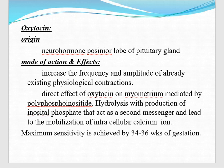Now the third method is oxytocin. Oxytocin is available as an injection. Its origin is the neurohypophysis — the posterior lobe of the pituitary gland. Mode of action and effects: it increases the frequency and amplitude of already existing uterine contractions. So contractions are there, but we will increase the frequency and amplitude. The direct effect of oxytocin on the myometrium is mediated by phosphoinositide hydrolysis with the production of inositol phosphate that acts as a second messenger and leads to mobilization of intracellular calcium.